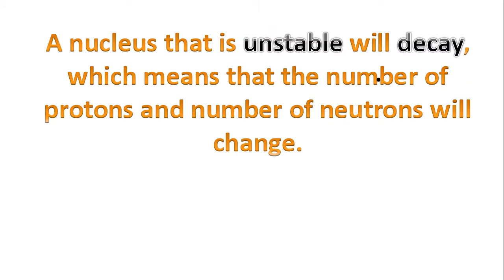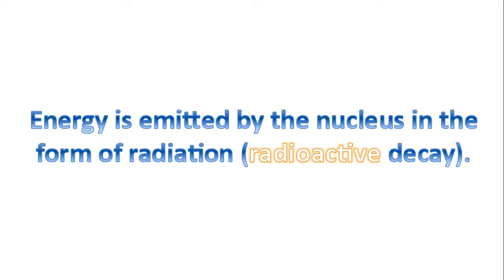A nucleus that is unstable will decay, which means that the number of protons and neutrons will change. During this decay, energy is emitted by the nucleus, and that's why it's called a radioactive decay. The energy is emitted in the form of radiation.